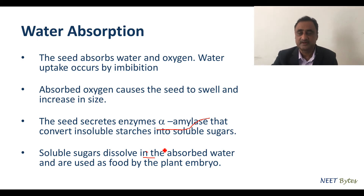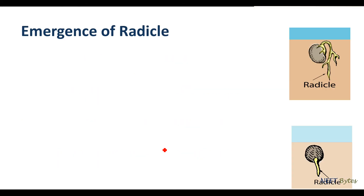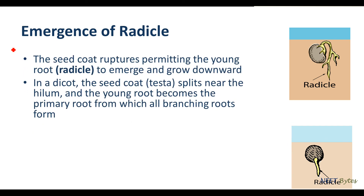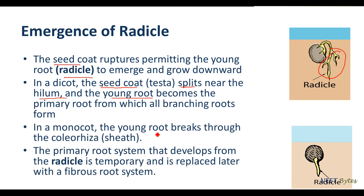The radicle emergence is the very first event that occurs after germination. The seed coat is ruptured, the radicle emerges, and it shows a downward movement towards the earth. In dicot, the seed coat splits near the hilum, and the young root becomes the primary root from which all the rest of the branches appear, as we can see in the diagram.